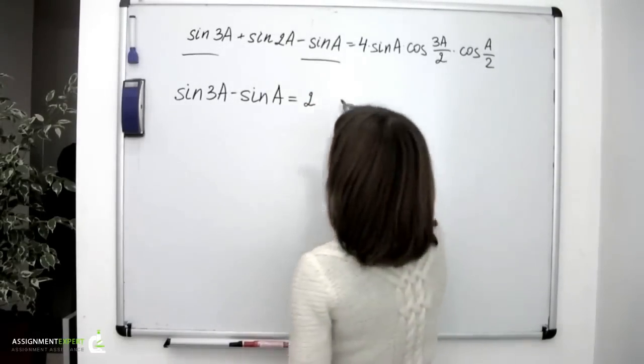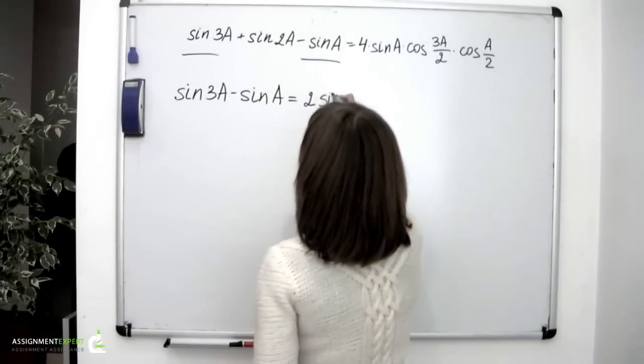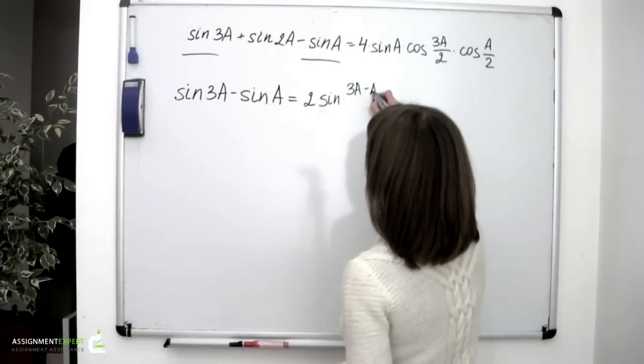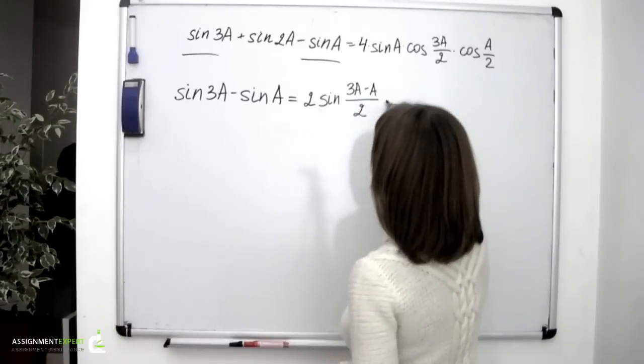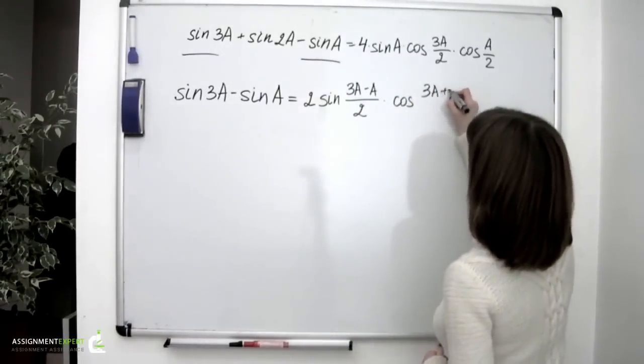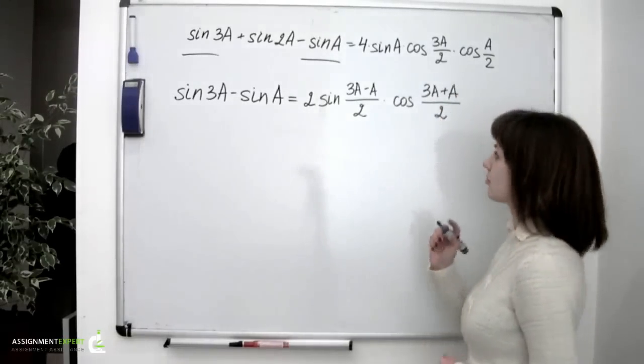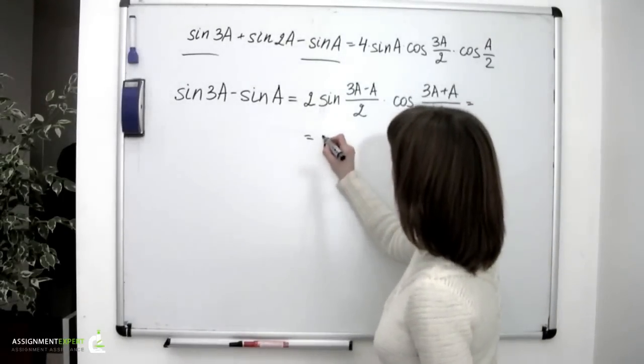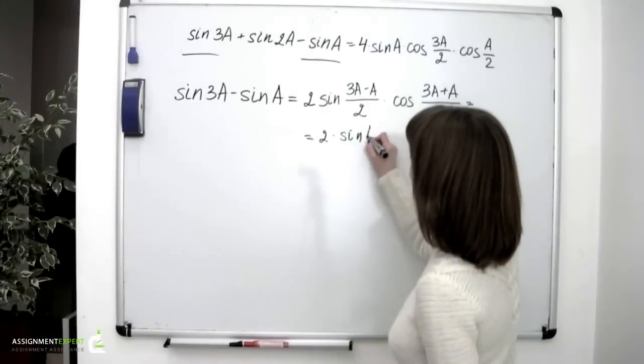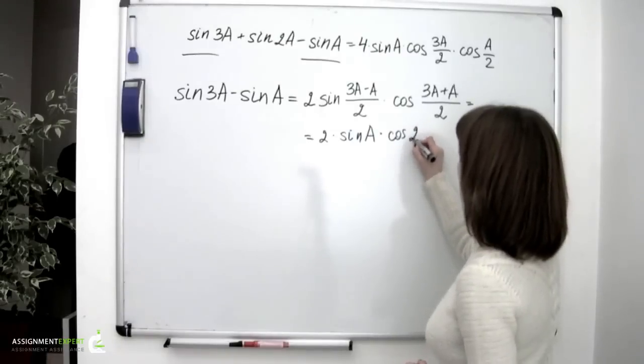sin a equals 2 times sin 3a minus a over 2 times cos 3a plus a over 2. Or 2 times sin a times cos 2a.